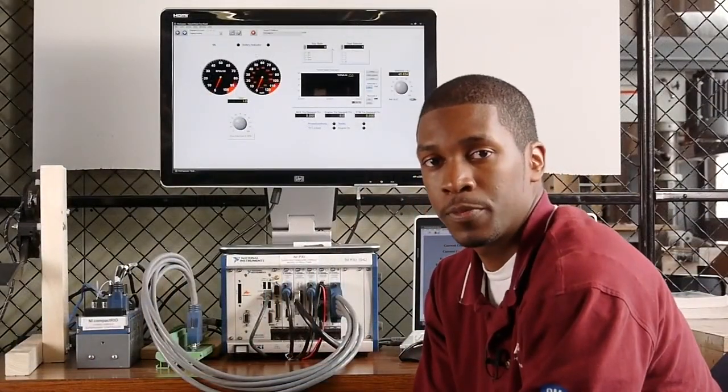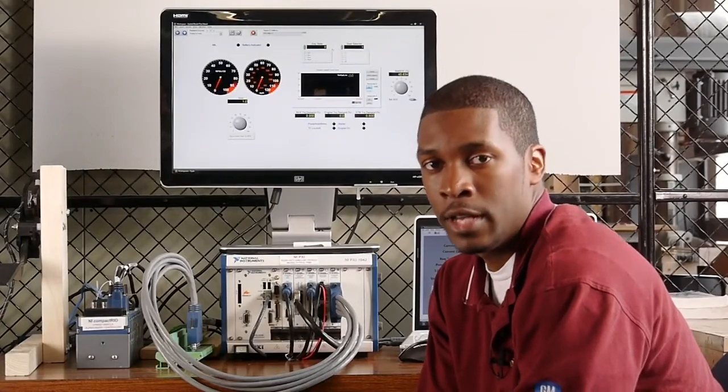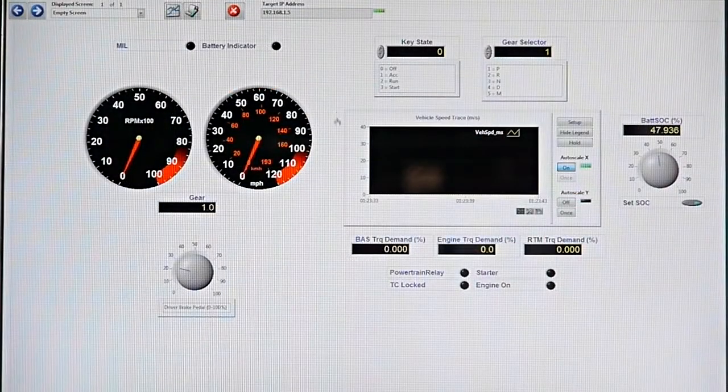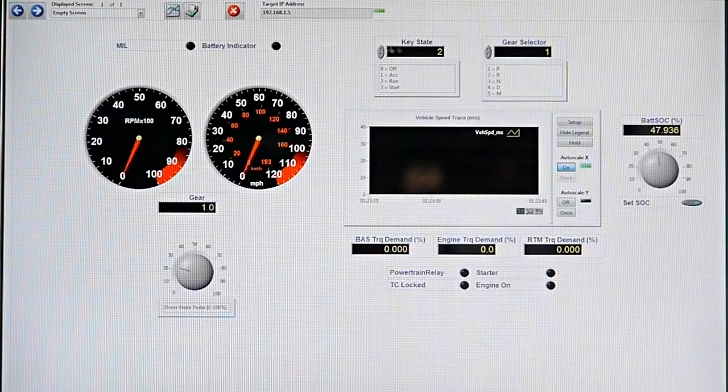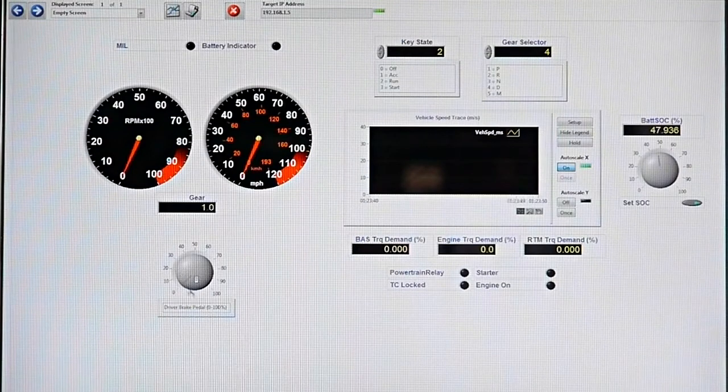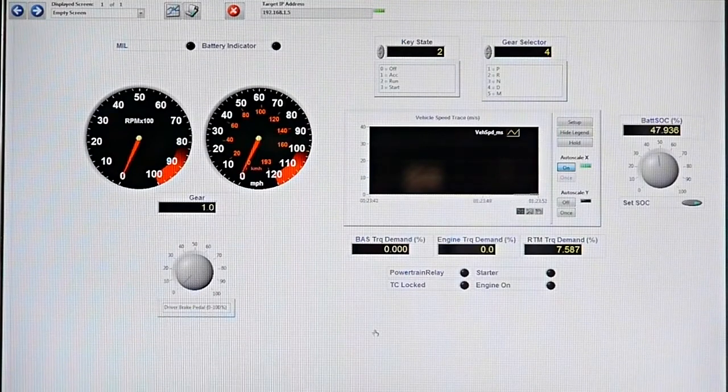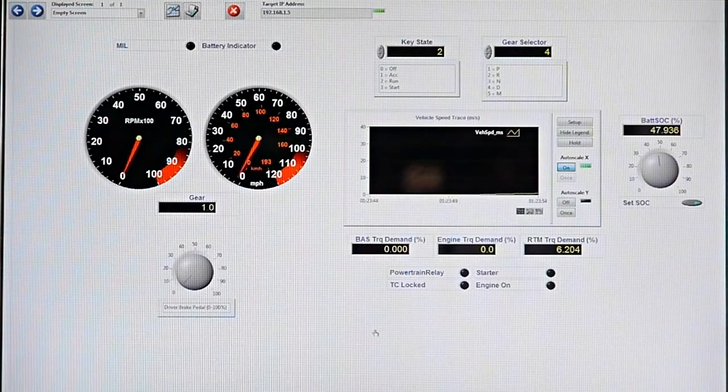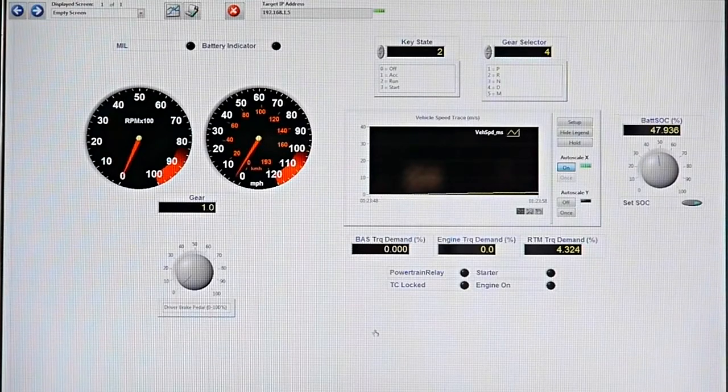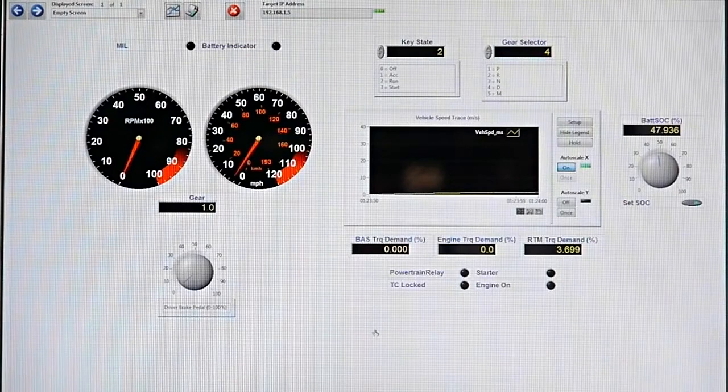Using the controls on the VeriStand workspace, I'm going to go ahead and start driving the model and interacting with it just as a regular driver would. First I'll start by turning the key state to on, shifting the transmission into drive, and lifting my foot off the brake pedal. You can see that the vehicle begins to creep just like a regular vehicle would. You'll also notice that we're driving using the rear traction motor since the battery state of charge is currently high enough.